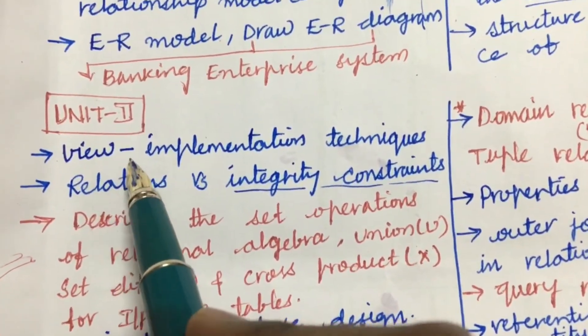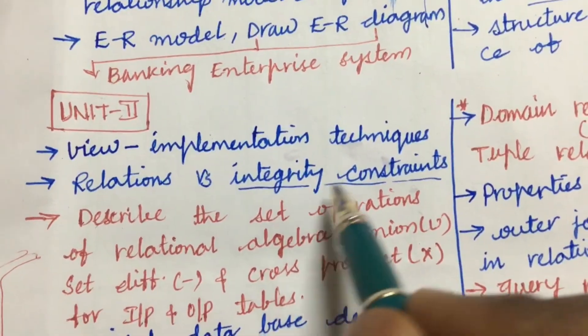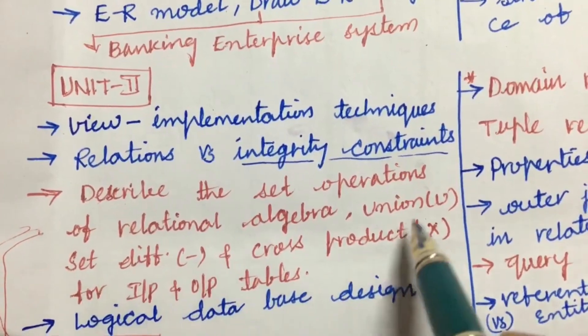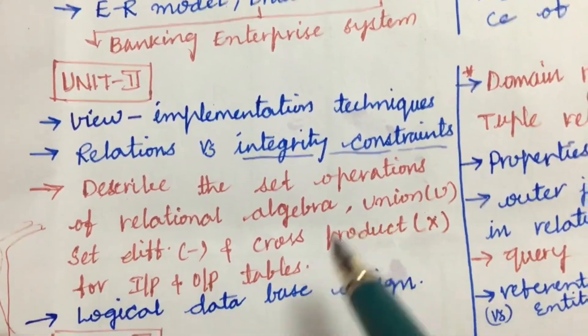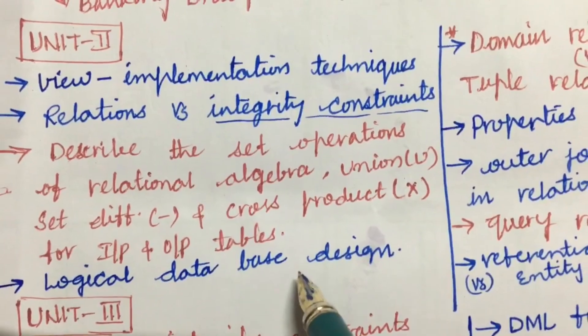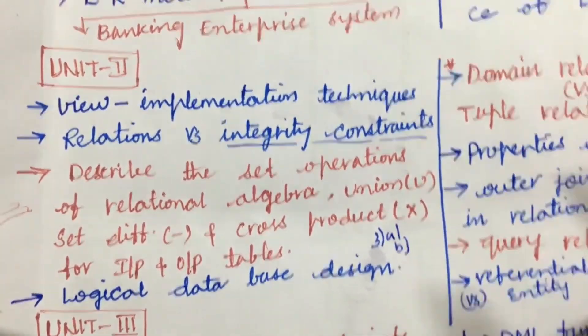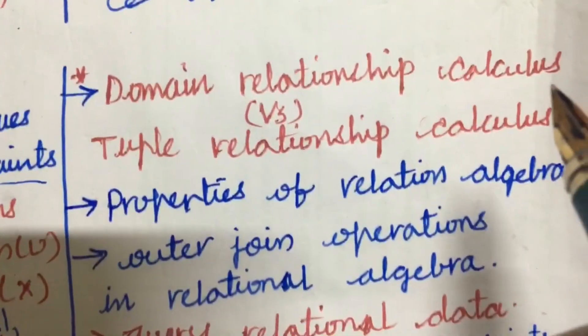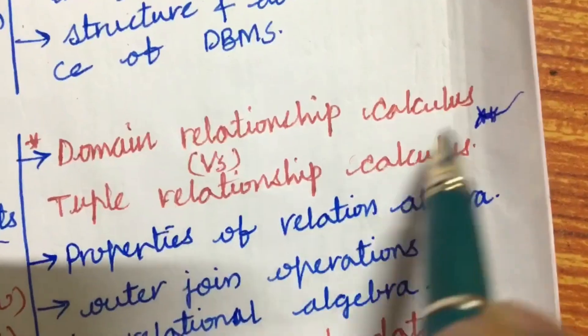Explain about the view and the implementation techniques and the relations versus integrity constraint differences. Sometimes this may be asked in the second unit itself, whereas this part is under third. The logical database design may be 3A as well as 3B. Relationship calculus versus tuple relationship calculus is one of the very very important and gunshot question. This will be for sure this time in the question paper, either this or this or both.